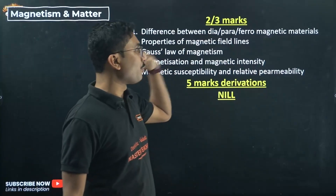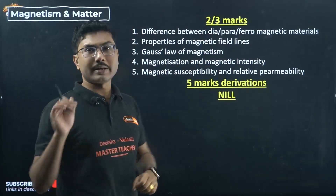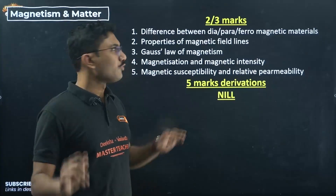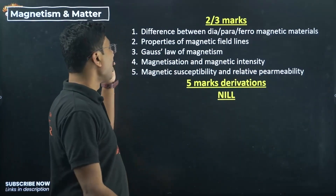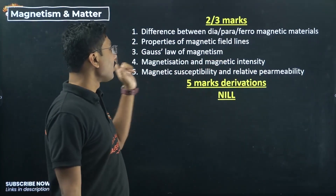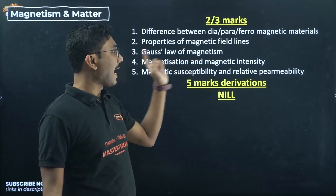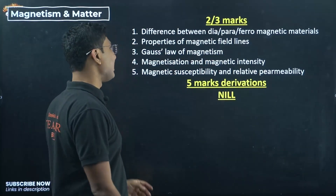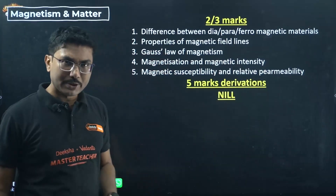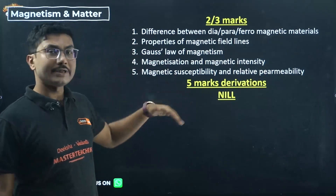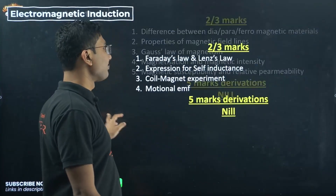Magnetism and Matter is a small chapter, but the questions are very predictable. Prepare: difference between diamagnetic, paramagnetic, and ferromagnetic materials; properties of magnetic field lines; Gauss's law of magnetism; magnetization and magnetic intensity — their definitions and relation; magnetic susceptibility and relative permeability and the relationship between them. Preparing these few questions will secure your marks from this chapter.